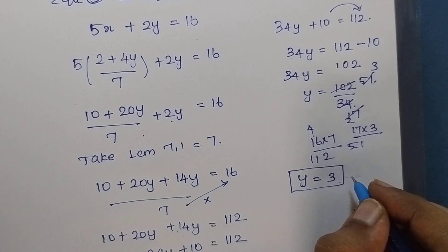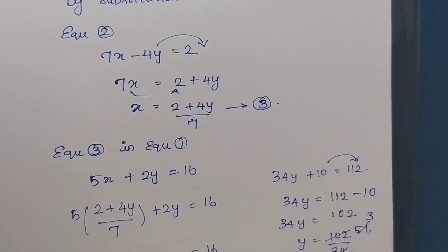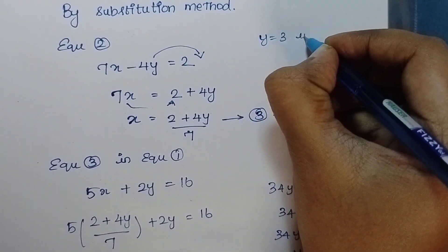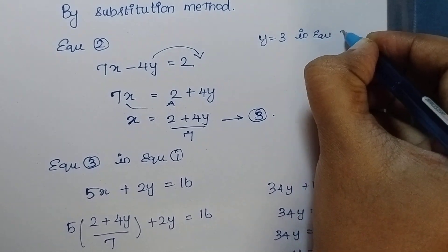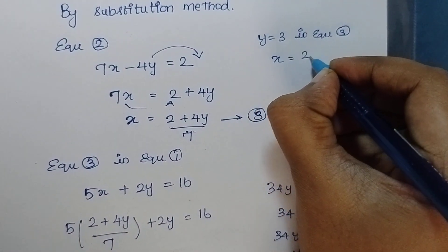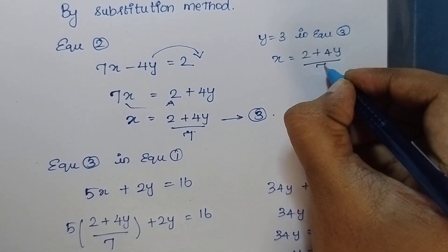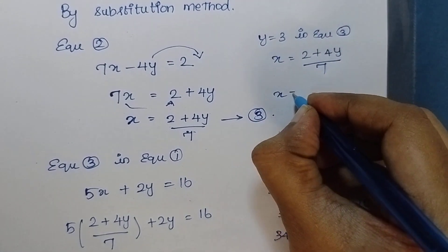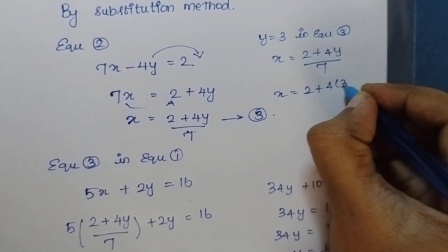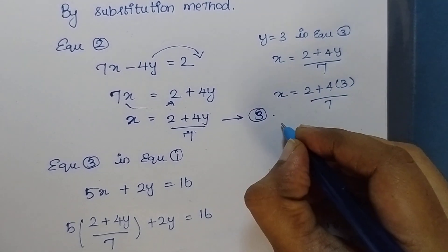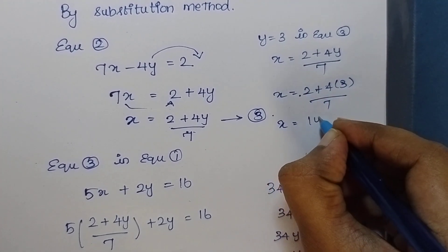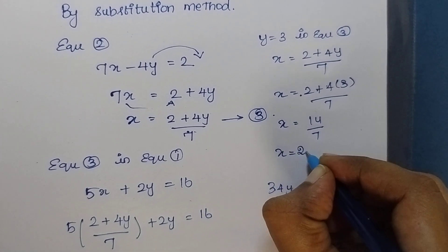I am going to substitute y is equal to 3 in equation number 3. Equation number 3 is x is equal to 2 plus 4y divided by 7. So x is equal to 2 plus 4 times 3, divided by 7. 4 times 3 is 12, and 12 plus 2 is 14. So 14 divided by 7 gives x is equal to 2.